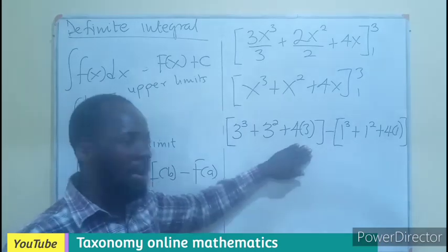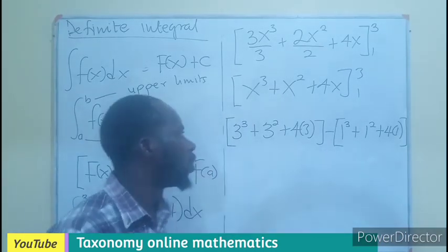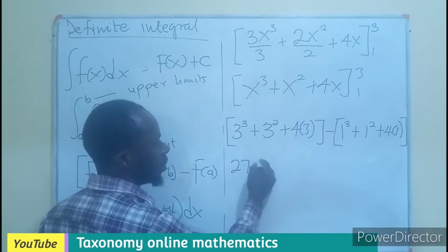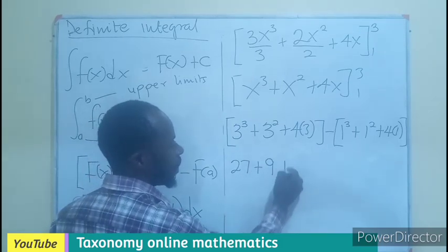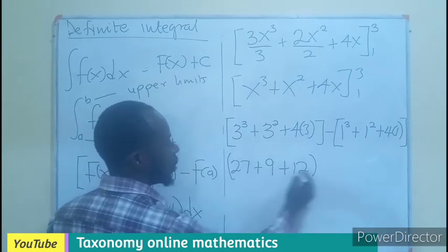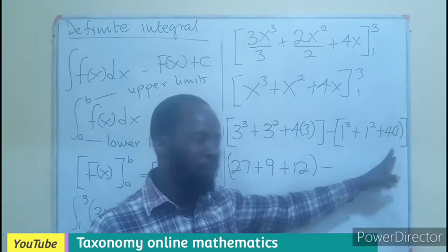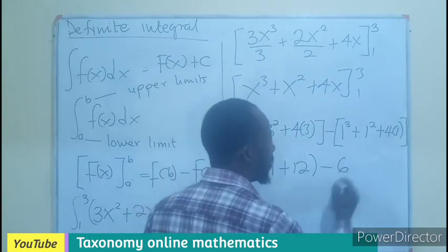So, this is for the upper limit. This is for the lower limit. So, what do we do? This right here will be 27 plus 9 plus 12 minus 1 plus 1 plus 4. And that will be 6.